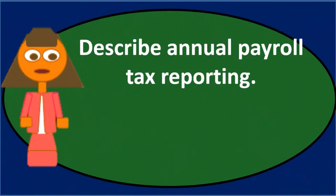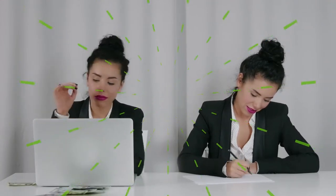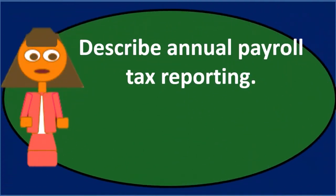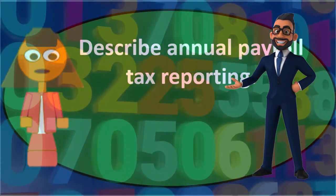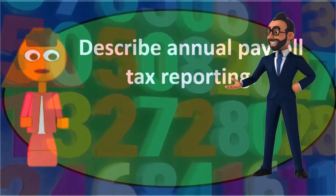When you see the rate for FUTA for practical purposes, it's currently a really low rate like 0.6%, but you'll often see a higher rate based on the idea that it's a higher rate unless you pay SUTA — which almost every state has — and therefore you pay the lower rate. That's basically how the FUTA calculation works.